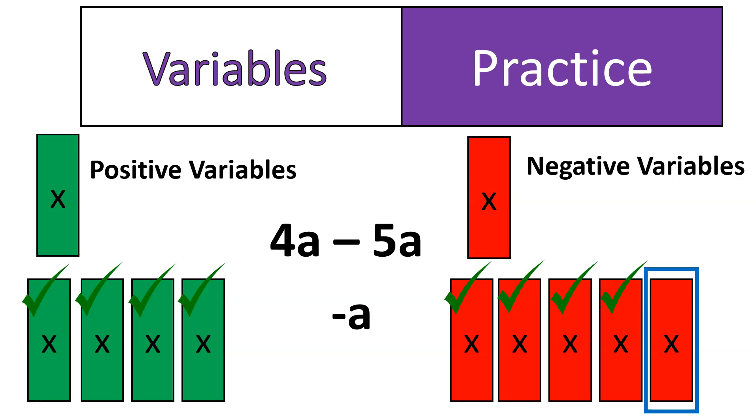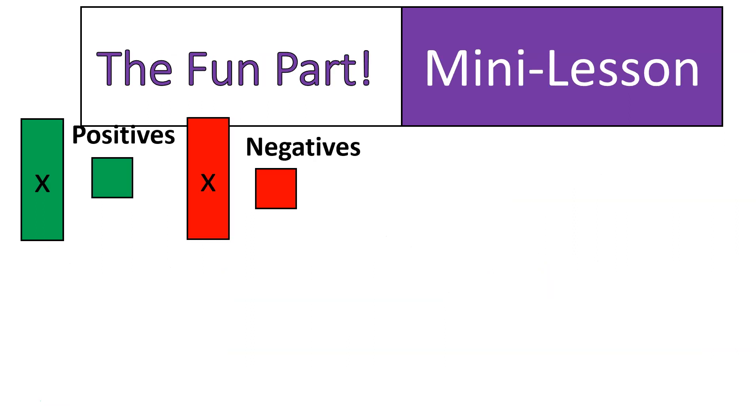That one was a little bit tricky. So if you're sticking with me, awesome. Excellent job. Because now is when it gets to be really fun. We're going to mix together integers, which are positive and negative numbers, and variables. We're going to be using the symbols that you see there. Our variables will be those tall blocks with the x's in them. Our numbers will be the squares. And green is positive, red is negative. I'm going to show you the first example, and then I'll give you a practice question that you can try on your own.